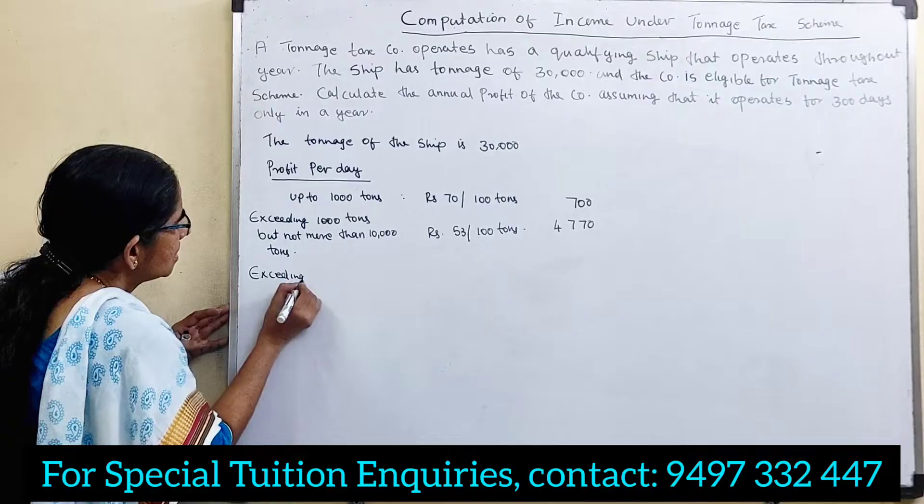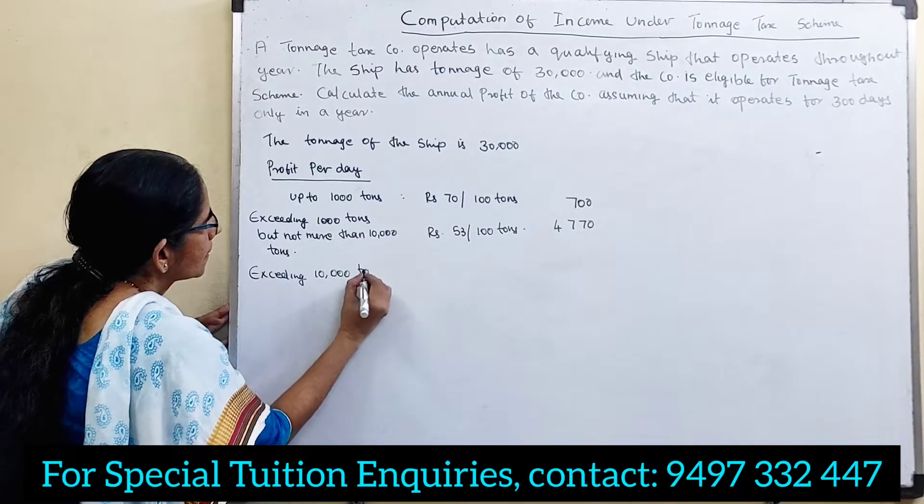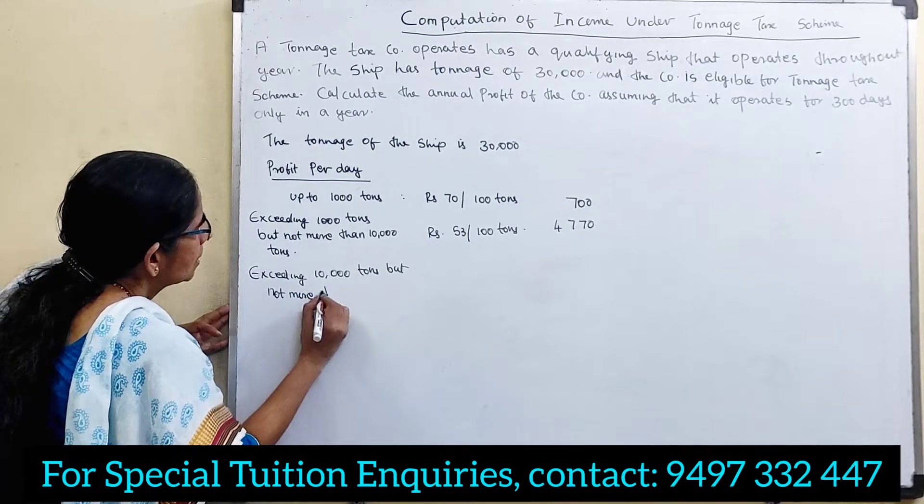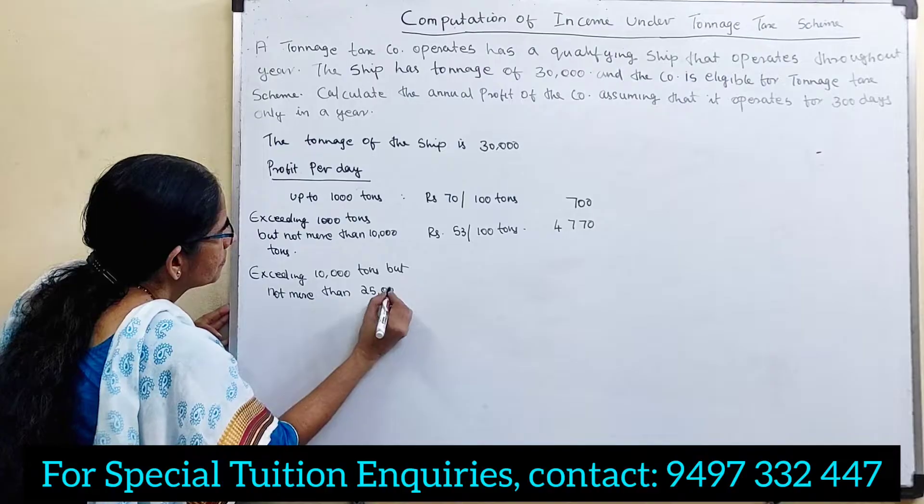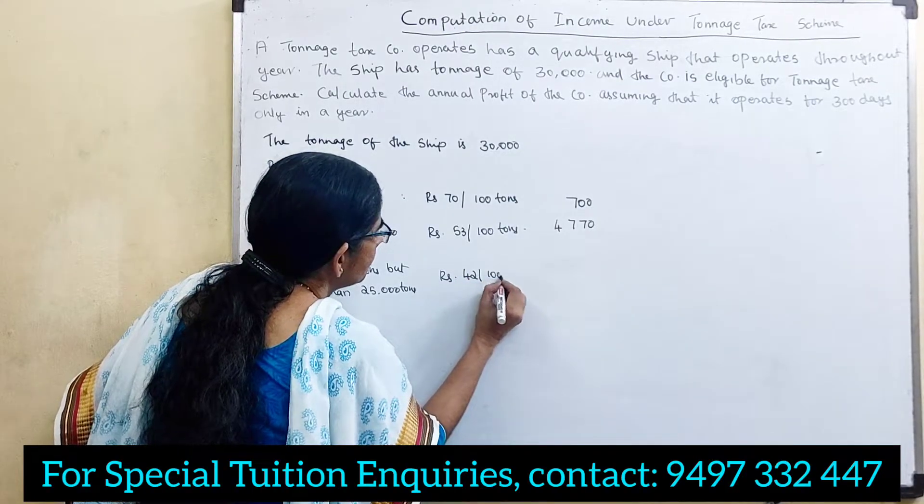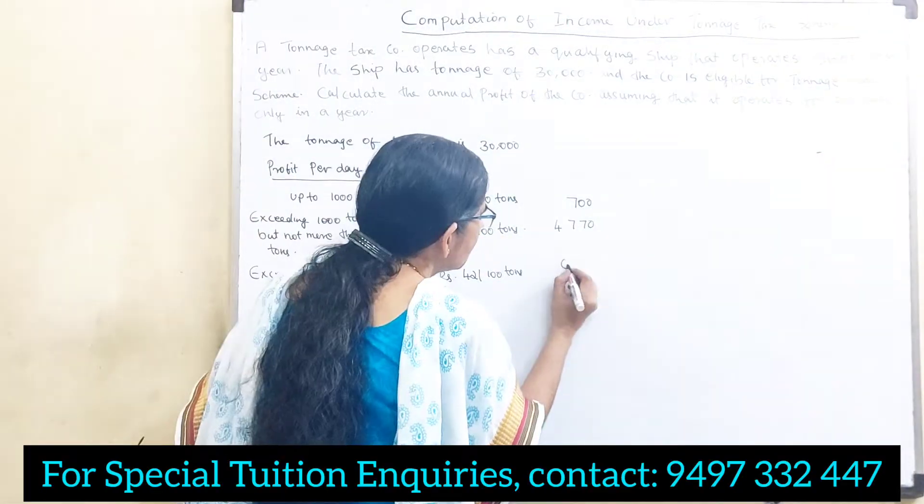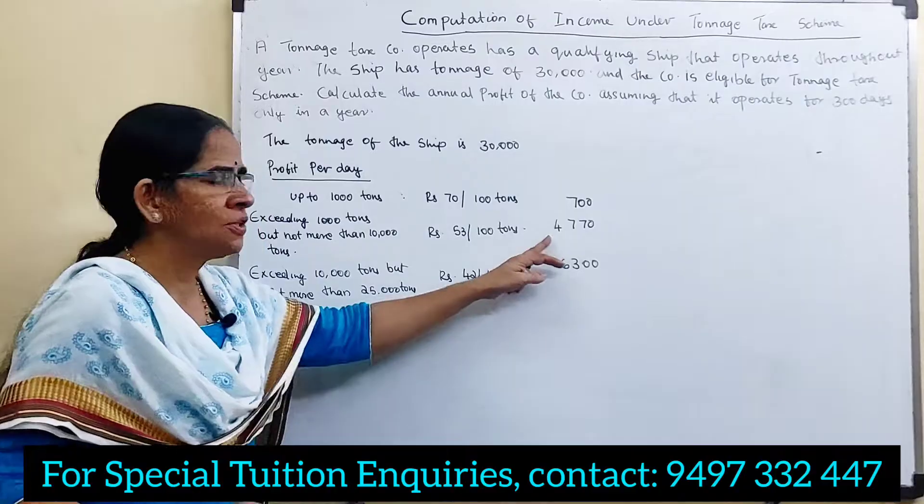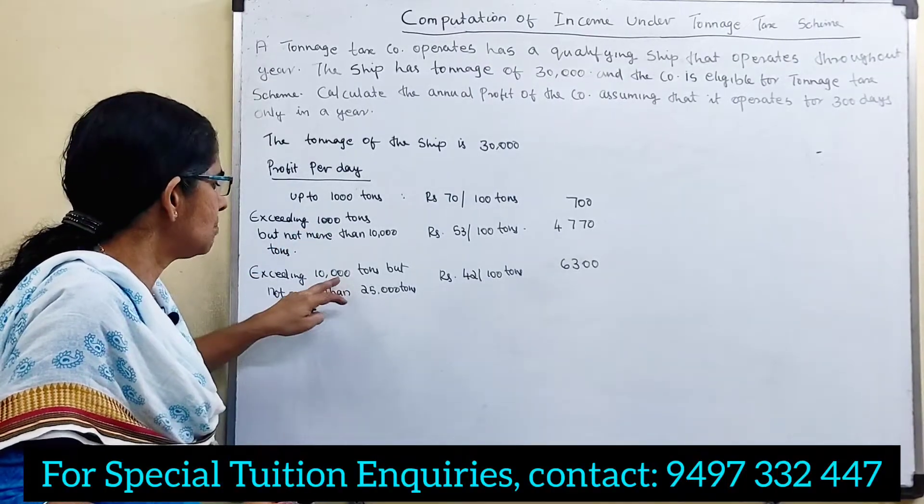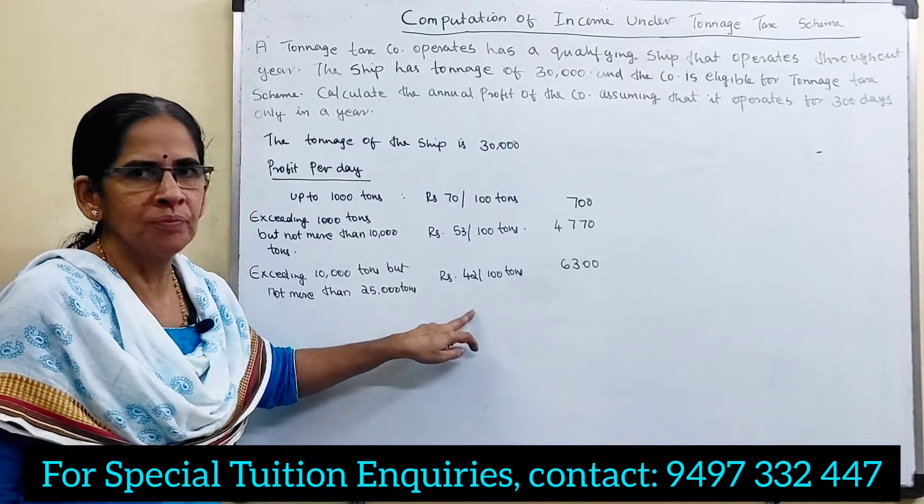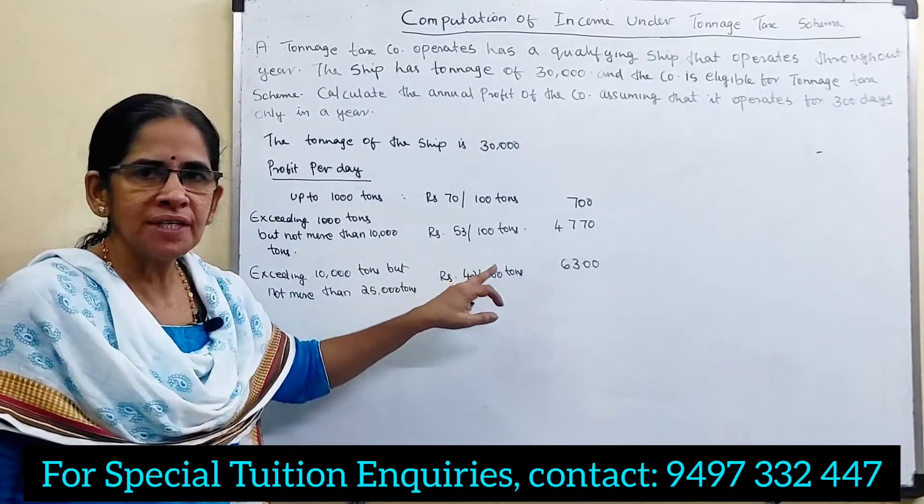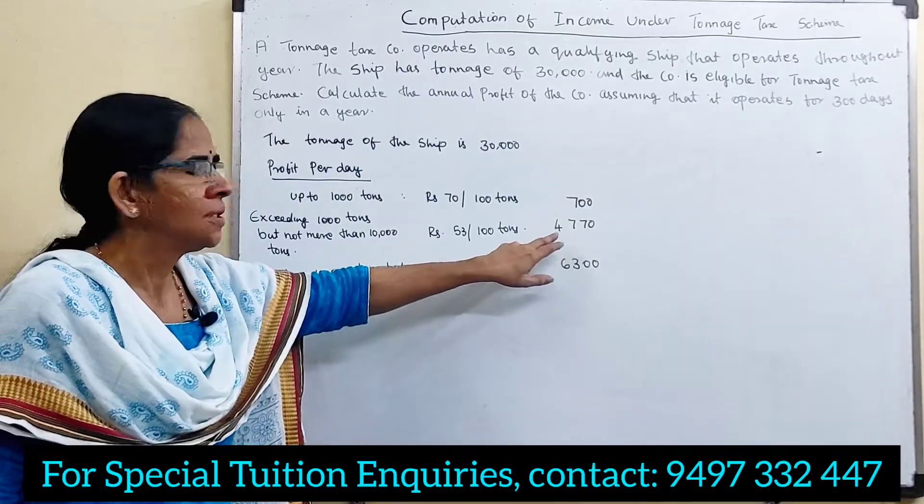Exceeding 10,000 tons but not more than 25,000 tons. That is rupees 42 per 100 tons, that is 6,300. 9,000 into 53. 25,000 minus 10,000, that is 15,000 into 42. 15,000 means 100 tons, 100 tons is 42.